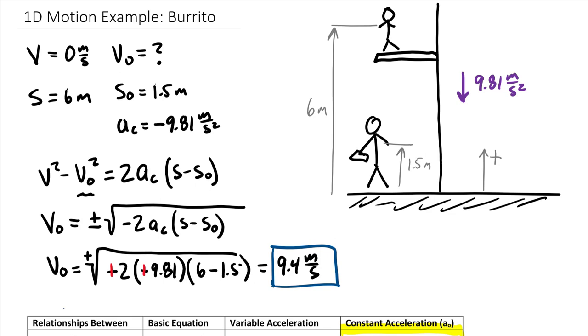A couple things to note in this problem: one of those is that we did add an axis system. Even though we only had a one-dimensional problem, every problem in this class, doesn't matter one dimension or two, always needs an axis system. You line up any vector terms. Notice the vector terms in this problem would be a sub c, this s, this s naught. Technically v and v naught are vector terms, but because they're squared the negative signs would go away anyways. This outlines, for a one-dimensional problem, how you could throw a burrito.